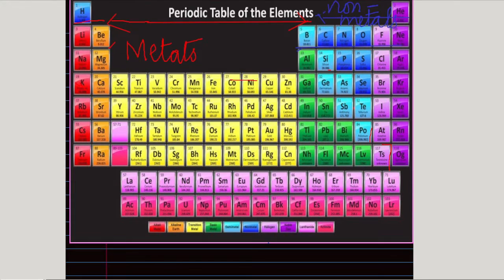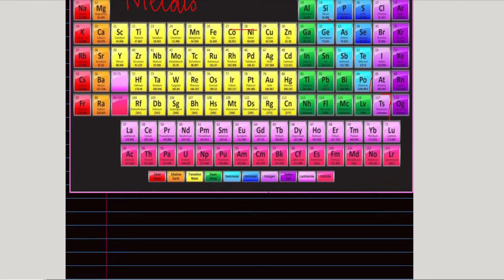We will learn more about the periodic table in further classes. Metals are good conductors of electricity, but non-metals are not good conductors of electricity. The only exception is graphite, which is a non-metal that can conduct electricity.